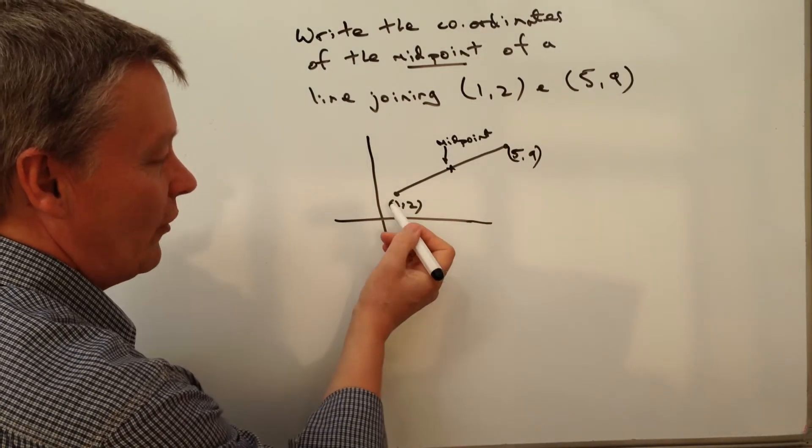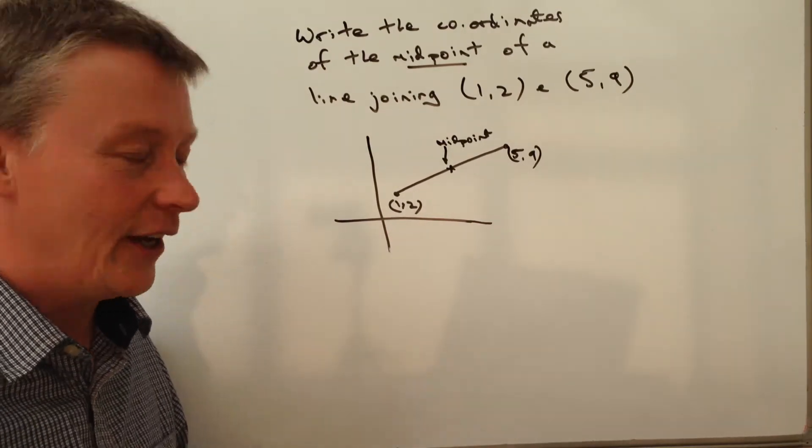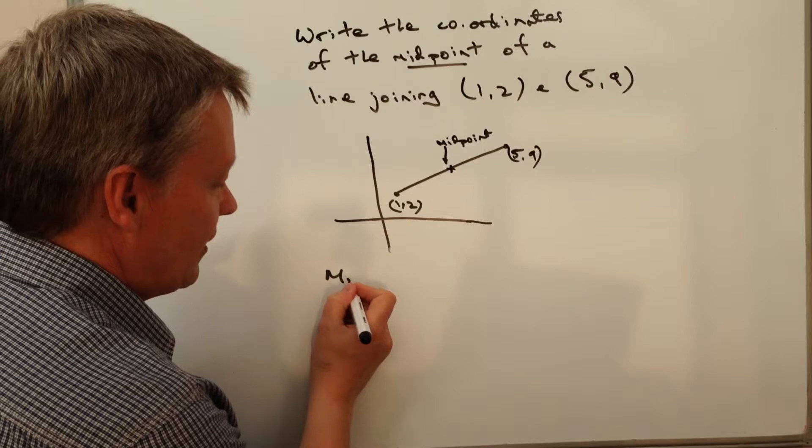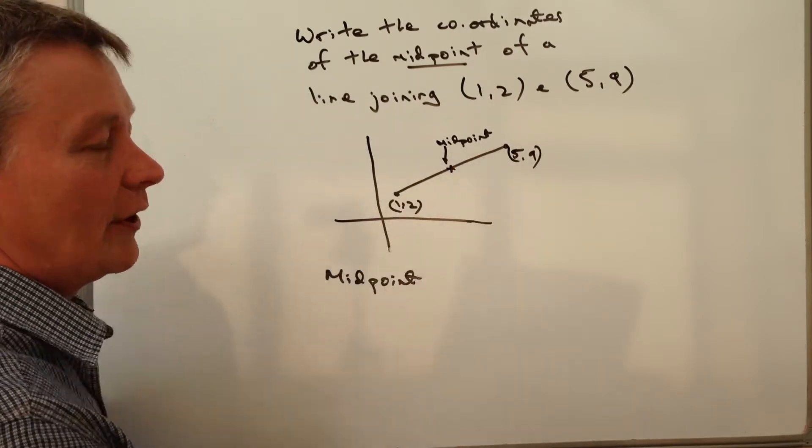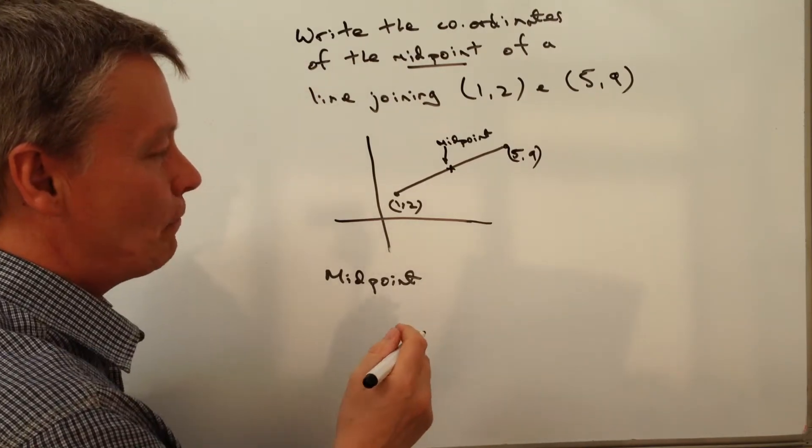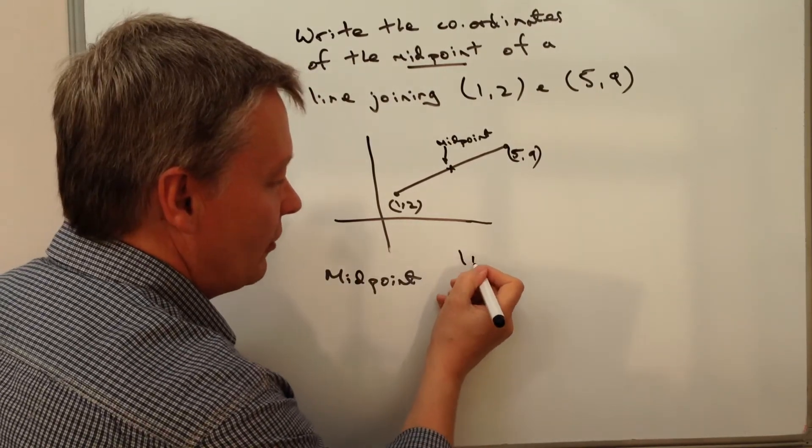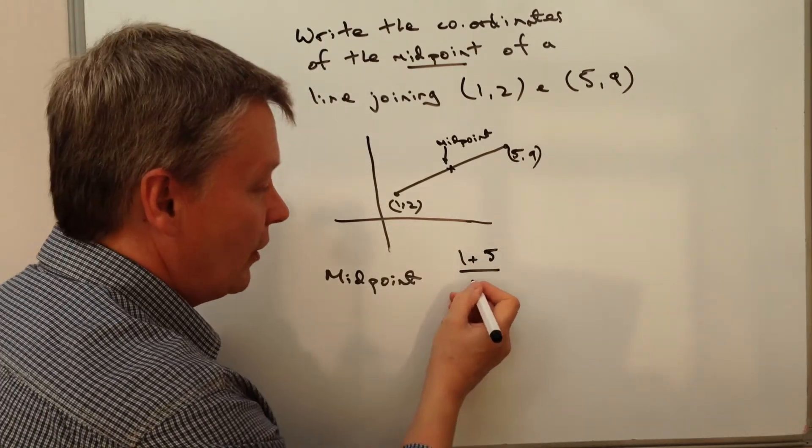So at the moment we've got an x coordinate of 1 and an x coordinate of 5, so the midpoint is going to be the average of 1 and 5. To work out the average of two numbers, you add those two numbers together - so 1+5 - and then divide by 2.